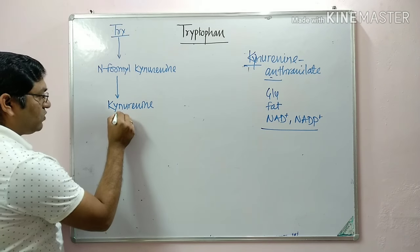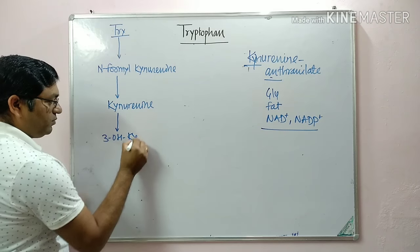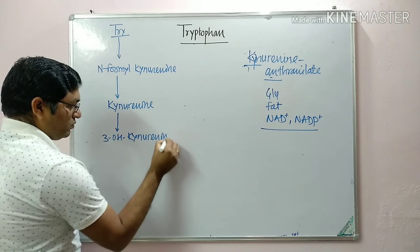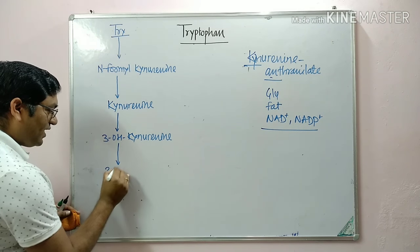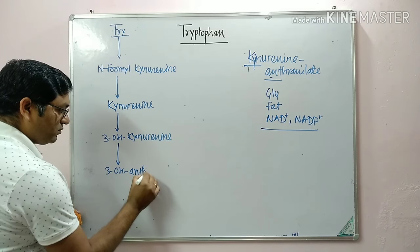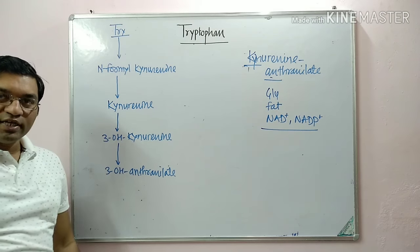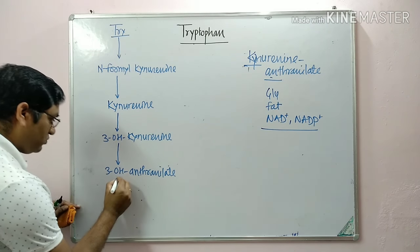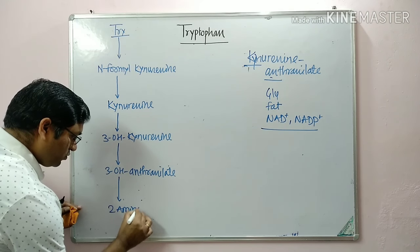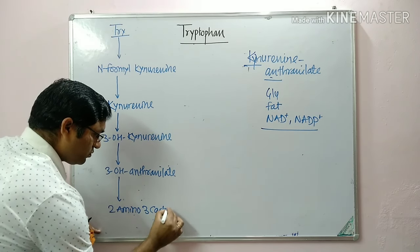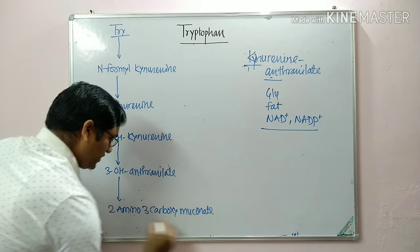By the action of hydroxylase, kynurenine is converted into 3-hydroxy kynurenine. With the help of kynureninase, it is converted into 3-hydroxy anthranilate, which is then converted into an unstable compound: 2-amino-3-carboxymuconate semialdehyde.